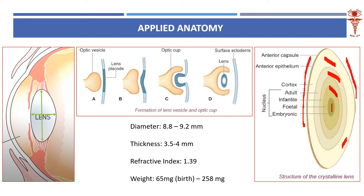The lens is basically formed from the surface ectoderm. The surface ectoderm forms the lens, and the lens detaches and stays inside the developing optic vesicle. Although all other structures in the anterior segment are formed from neuroectodermal structures, the lens alone is formed from the surface ectoderm. That is why it is called a privileged protein or a sequestrated protein — it is basically from somewhere else and has come to reside here.